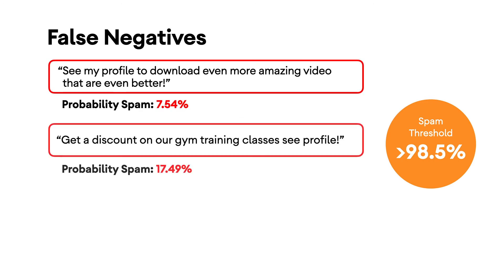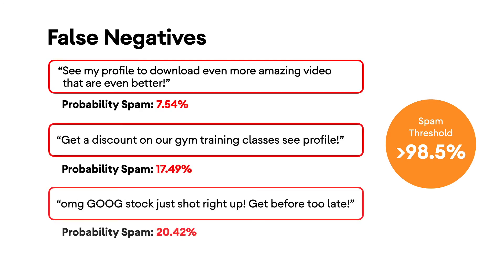Finally, you can check the false negatives — these are spam comments that were allowed to be posted. Looking at the classification percentages here, there is nothing you can do by simply changing the spam threshold without making many of the prior situations be misclassified too, given that the lowest confidence is around 7% here. The only thing left to do at this point is to retrain the model to account for the new edge cases you discovered so it gets better at predicting such situations.